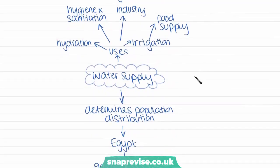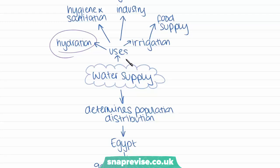Our next factor is water supply. People need access to water to survive — humans cannot survive without it. The main reason we need a fresh water supply is for hydration, but there are other key uses too: irrigation for food supply since crops need water to grow, hygiene and sanitation such as sewage systems, and industry where many chemical processes require water. That's why water supply is so important to supporting human populations.